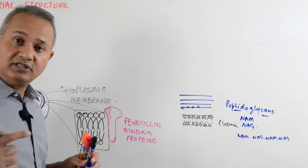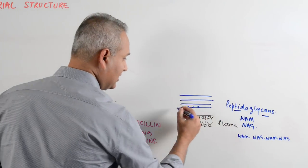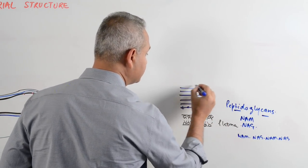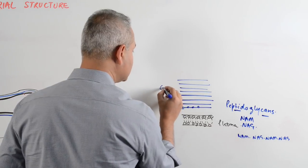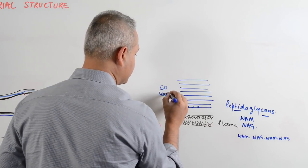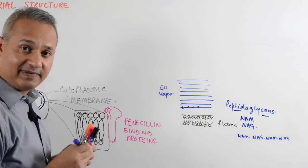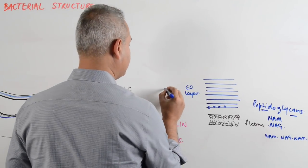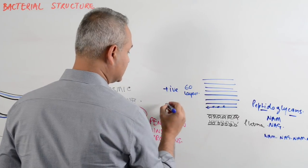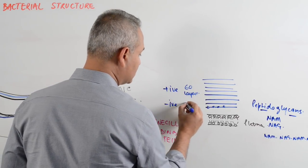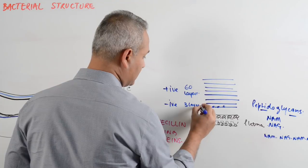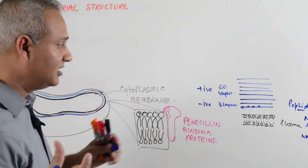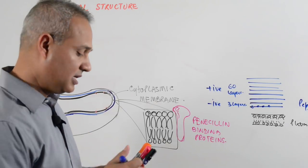On the gram positive bacteria, the peptidoglycan layers are up to sixty layers. In gram negative bacteria, there are just up to three layers. So gram positive has up to sixty layers; gram negative has up to three layers, meaning the cell wall in gram negative is very thin.